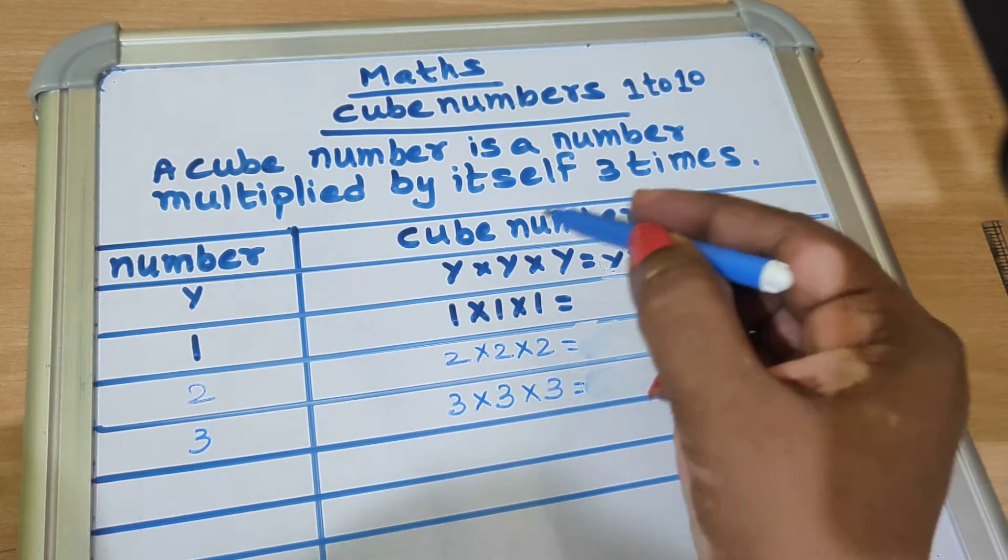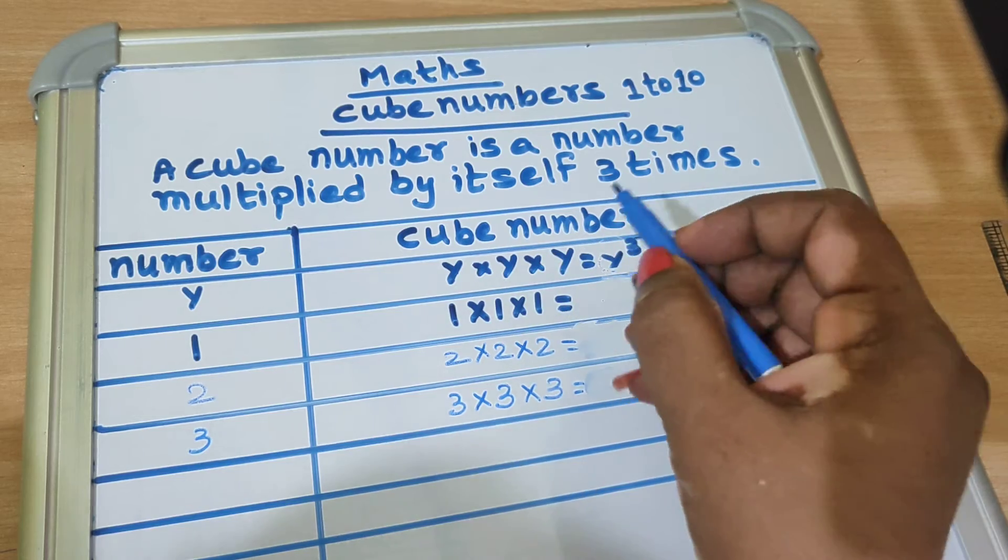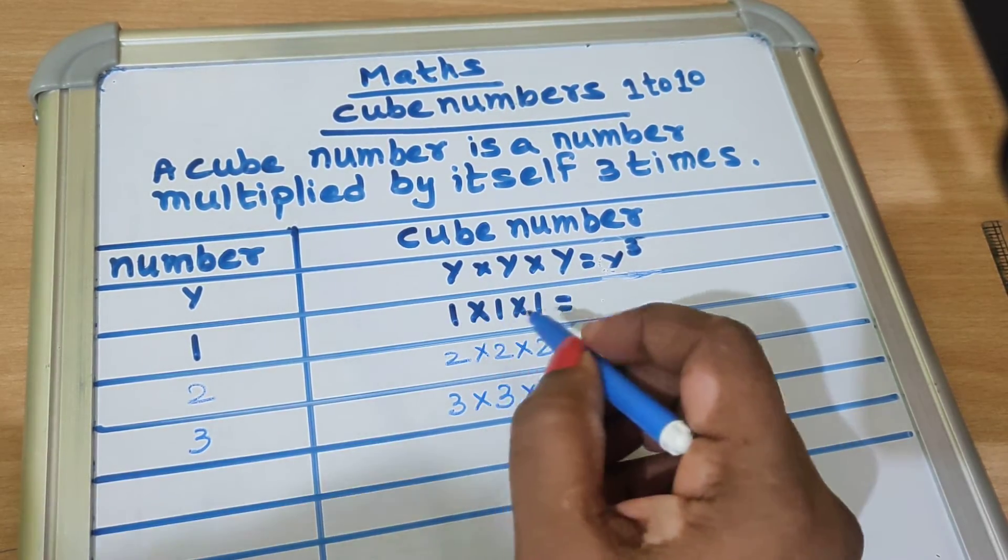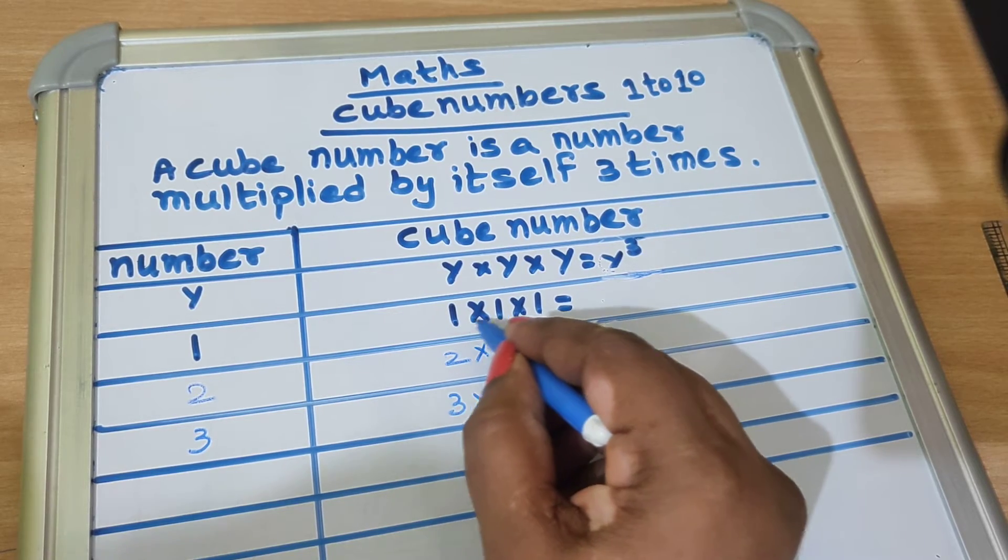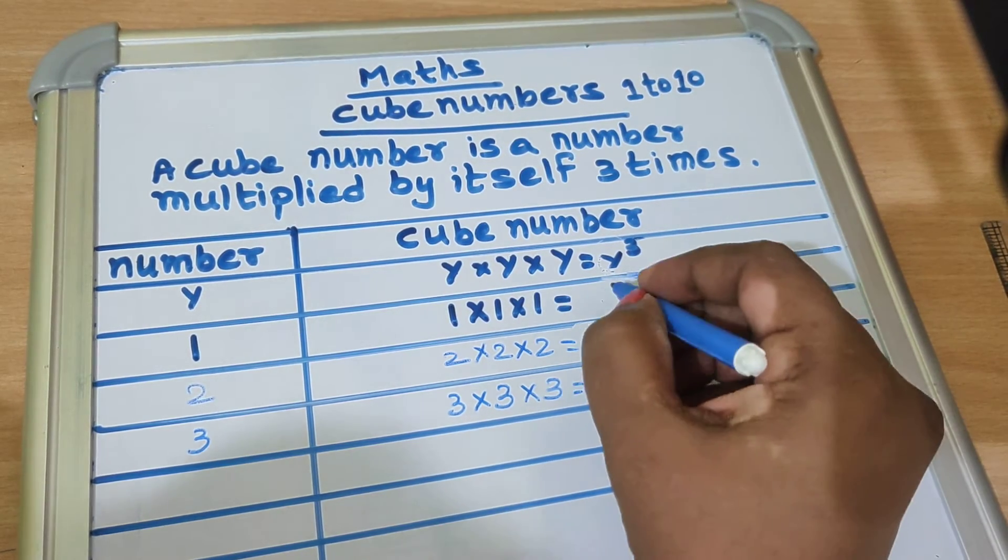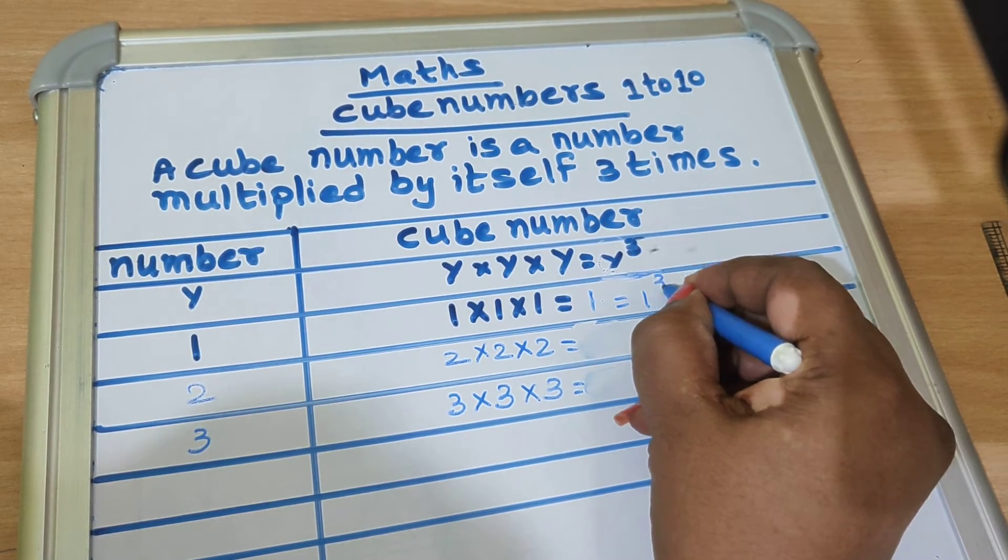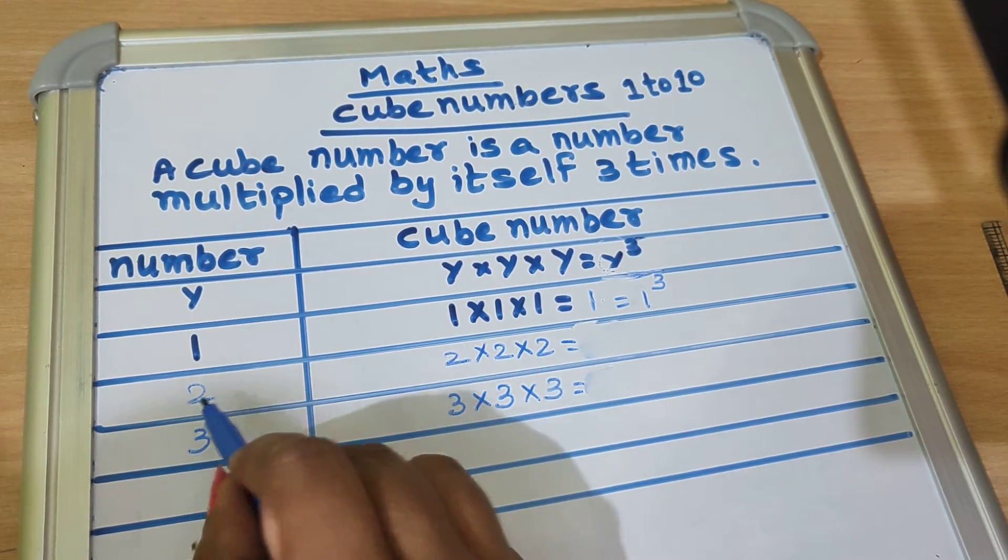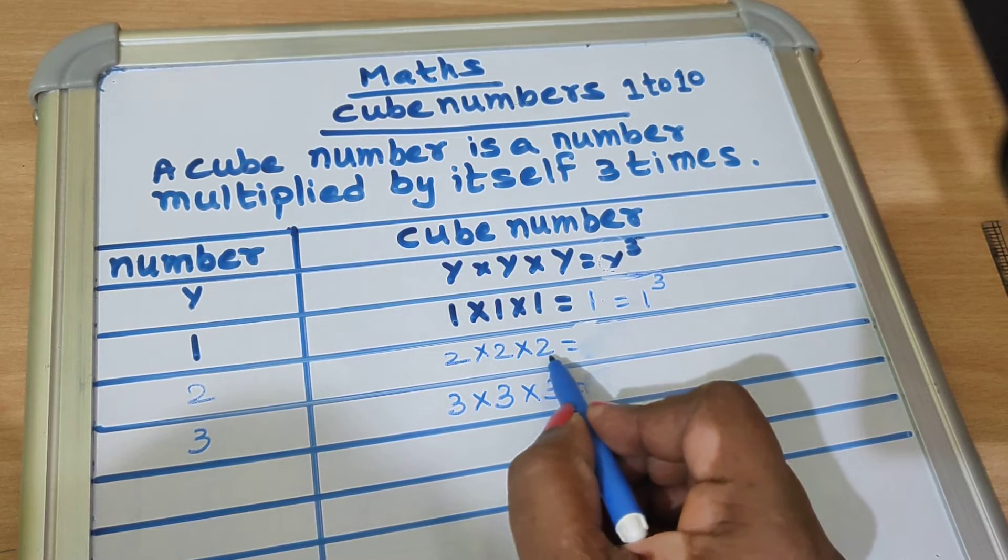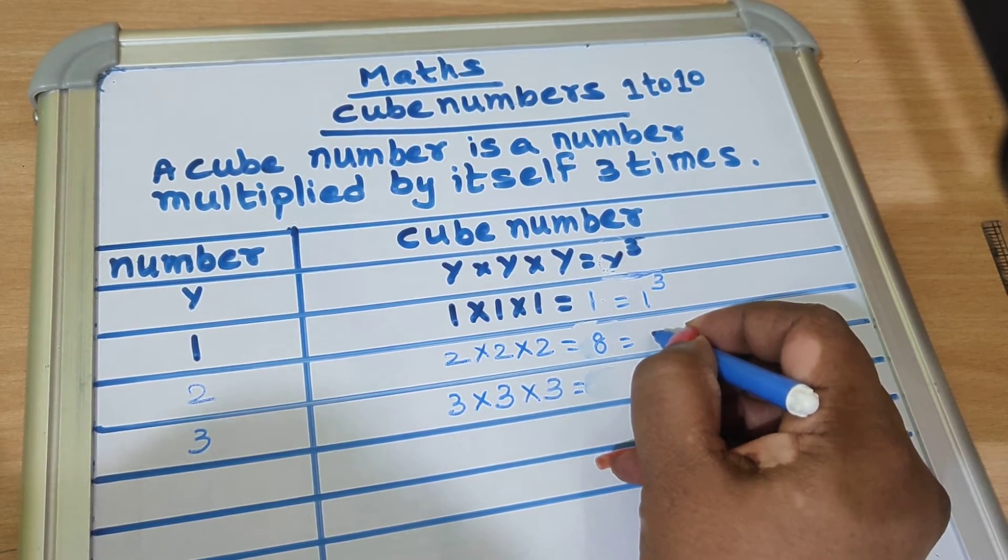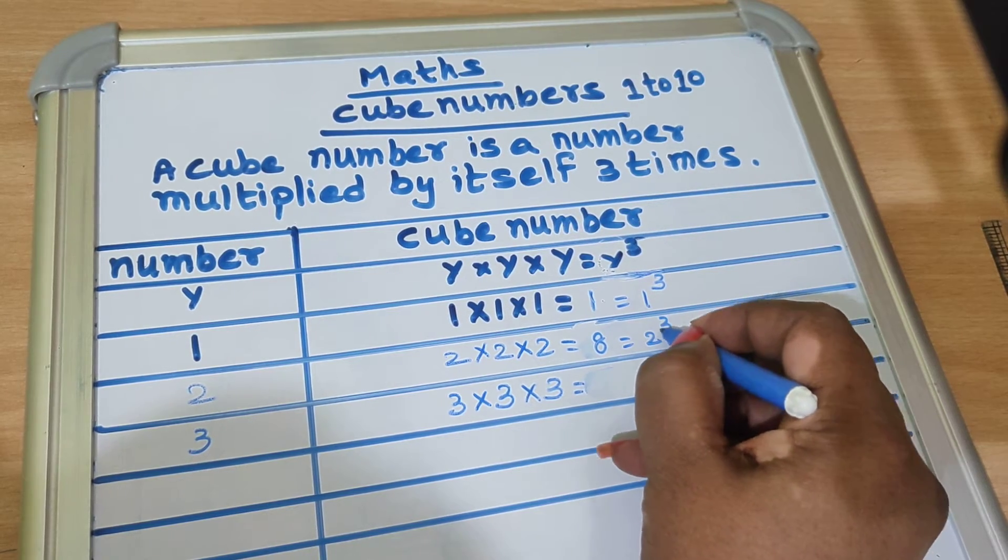Now, let's learn cube numbers of 1 to 10. 1 into 1 into 1 equals 1, and we write this as 1 cube. Now see, 2 into 2 into 2 equals 8, we write as 2 cube.